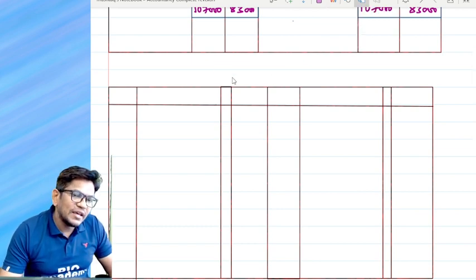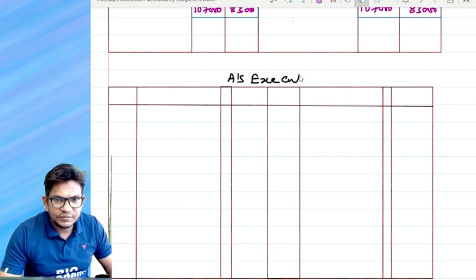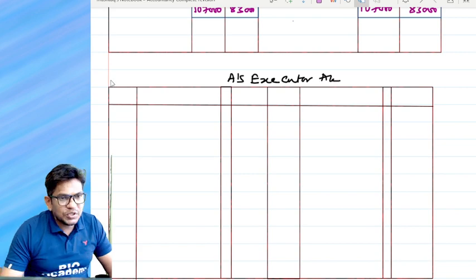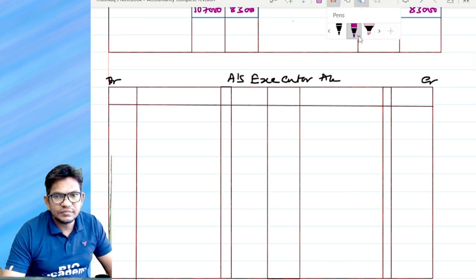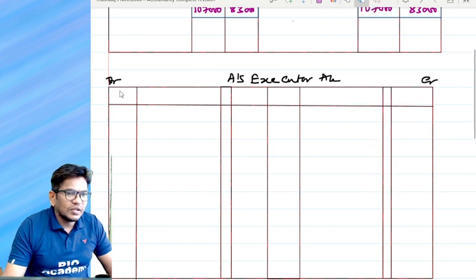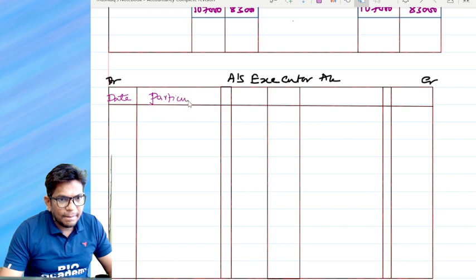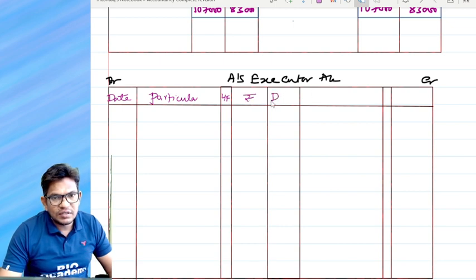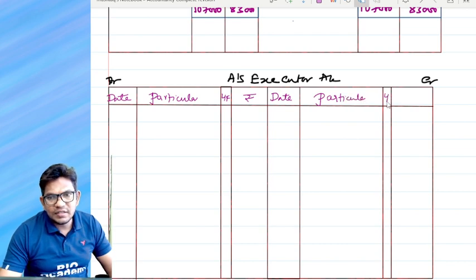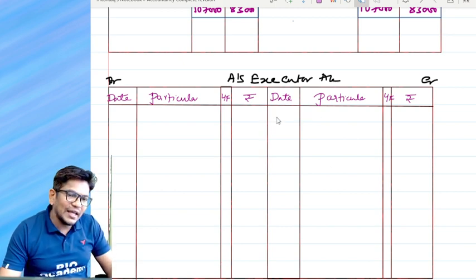A's executor account. So, debit and credit. This is your date, compulsory. Particulars, ledger folio, amount. Date, particulars, ledger folio, amount. My dear students, always what we take is that first take any date, something like 1-4-16.